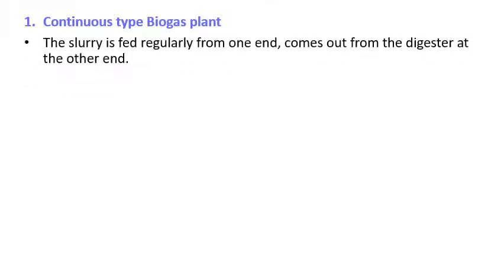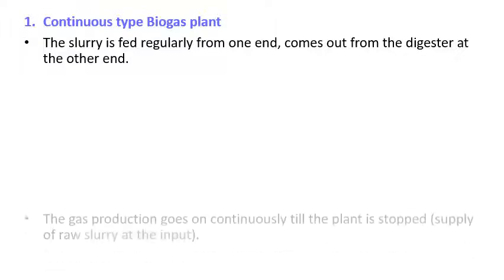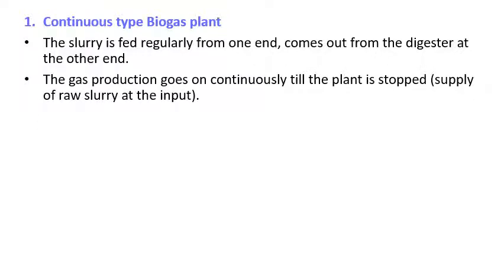What is meant by a continuous type biogas plant? The slurry is fed regularly from one end and comes out of the digester at the other end. At given intervals, the slurry is fed continuously, so gas production also goes on continuously until the plant is stopped. Both input and output are continuous — it is an open system.